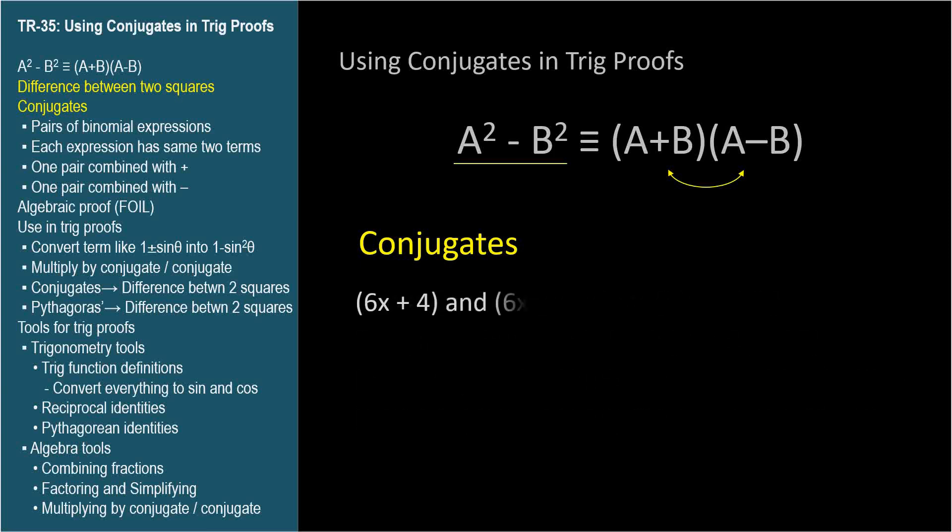6x plus 4 and 6x minus 4 are conjugates. 5 plus 2i and 5 minus 2i are conjugates. 1 plus sin theta and 1 minus sin theta are conjugates, which is where we're heading, but not yet.